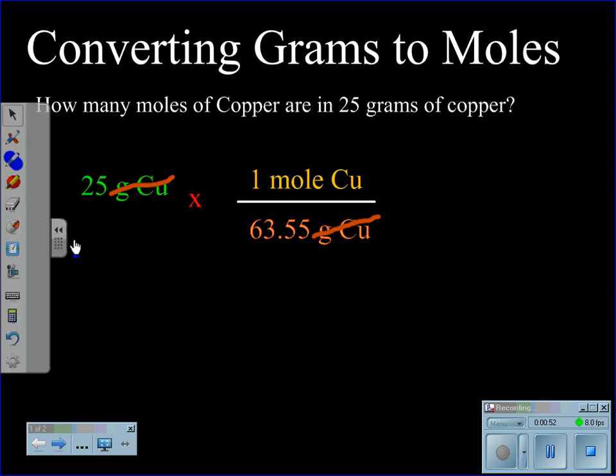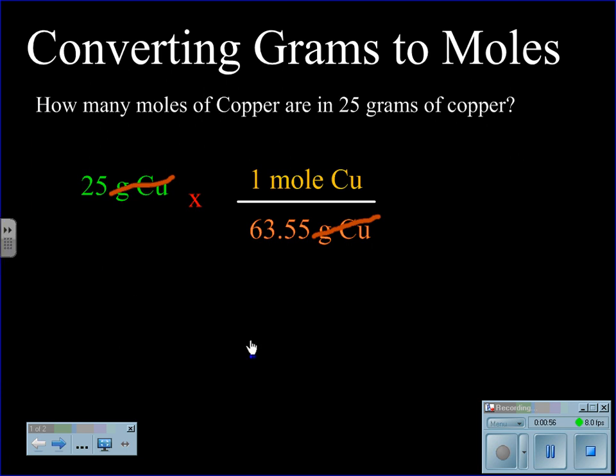In this case, we end up with 25 divided by 63.55, and we end up with the units moles of copper. So it's 0.39 moles of copper.